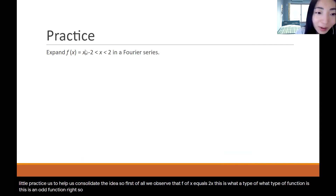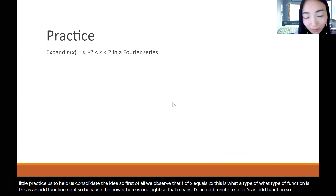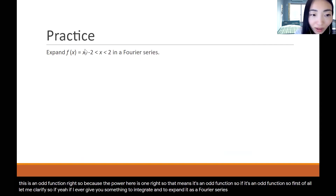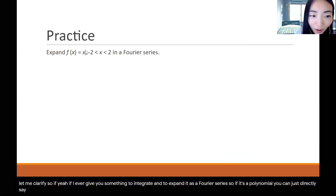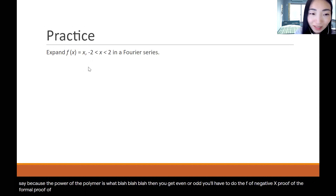It's an odd function, because the power here is one. So if I ever give you something to integrate and expand as a Fourier series — if it's a polynomial, you can just directly say, because the power of the polynomial is such and such, then you get an even or odd function. You don't have to do the f of negative x formal proof for even/odd.